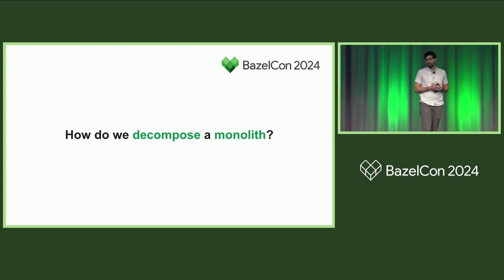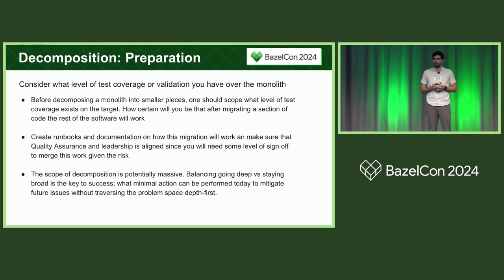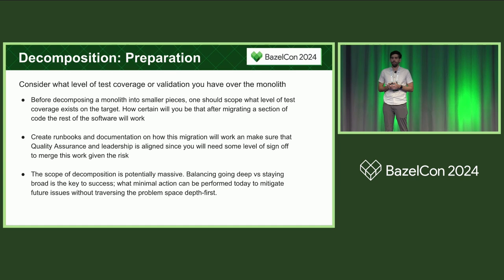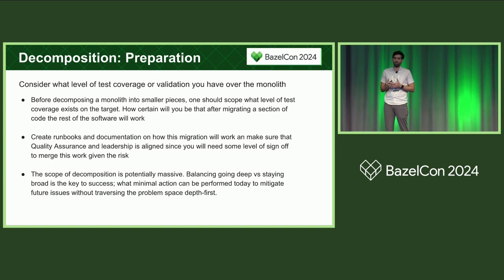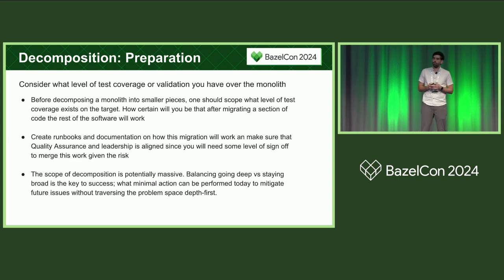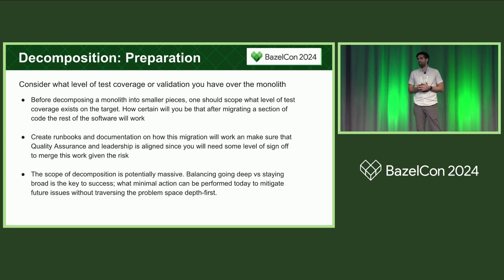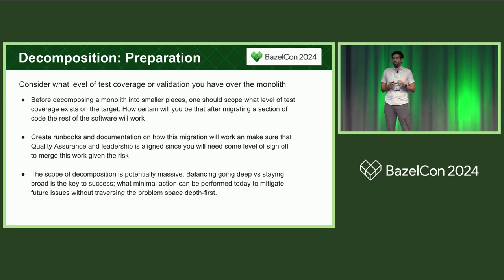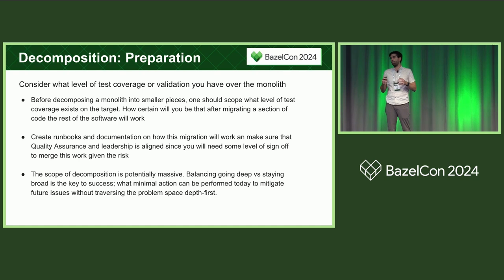So let's say you found your monolith and you're ready to swipe left on it. There are some steps you'll need to take before rolling your sleeves up. First, determine what level of test coverage exists on the target — is it none, superficial coverage, or meaningful coverage? This is important to understand since you'll need to communicate the risk that it could impact stakeholders. Next, you should create run books and documentation on how this migration will work. Ensure that QA and leadership are onboard and aligned, as you will require sign-off on these changes. These documents will also be vital to stakeholders in the event of regressions. Finally, the scope of decomposition is massive. It's important to find opportunities to safeguard the effort while not attempting to solve all problems at the same time, as attempts to solve the world can easily derail decomposition projects, especially as the scope rapidly expands.